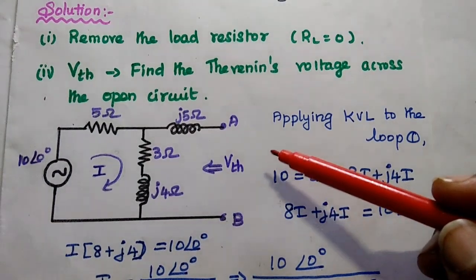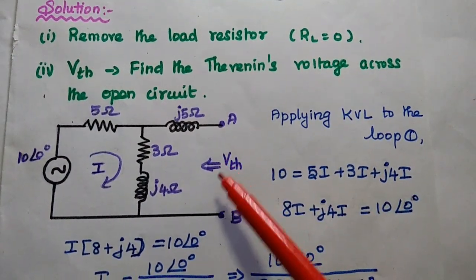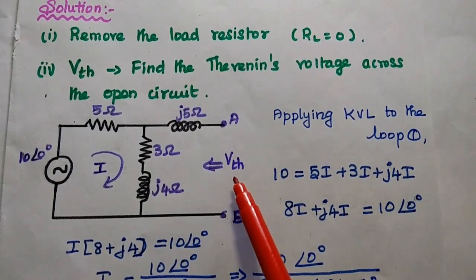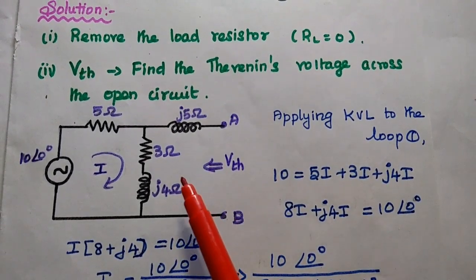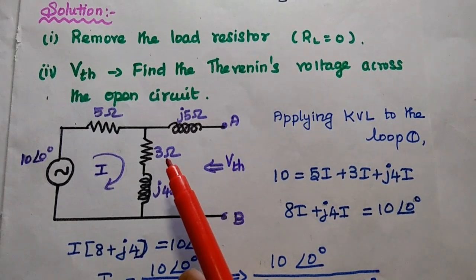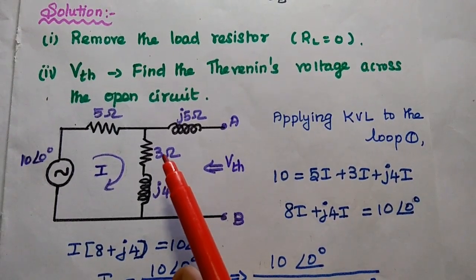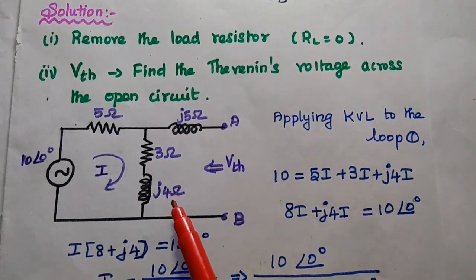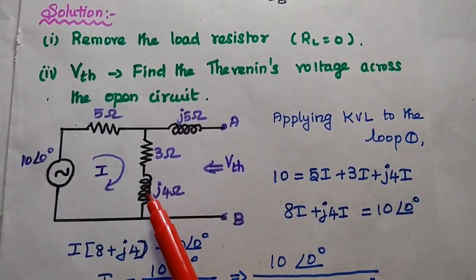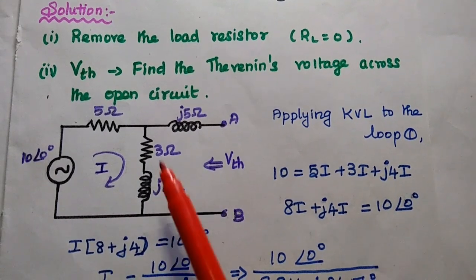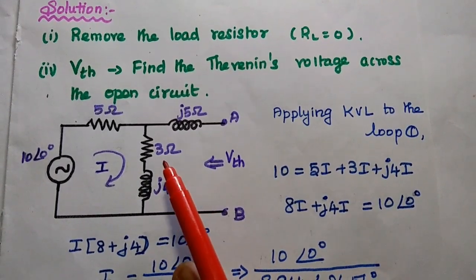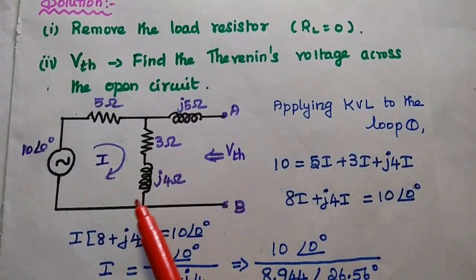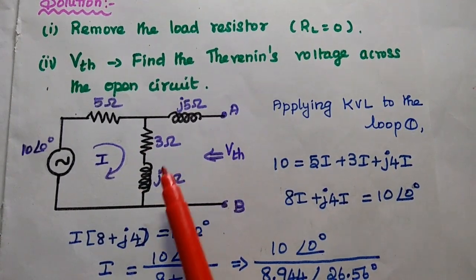We are going to find out the Thevenin voltage across this open circuit. This Thevenin voltage is nothing but the voltage drop across this branch which has 3 Ohm in series with J4 Ohm. The 3 Ohm is purely resistance and J4 Ohm is an inductive reactance, so combined we can say it is an impedance.